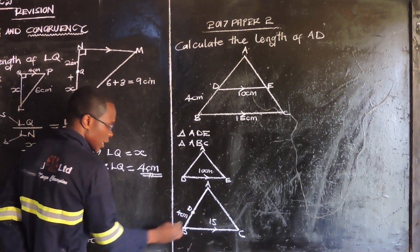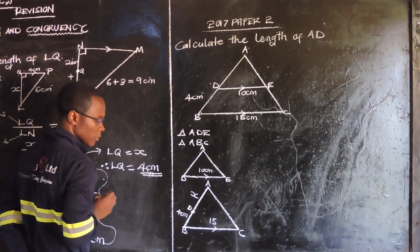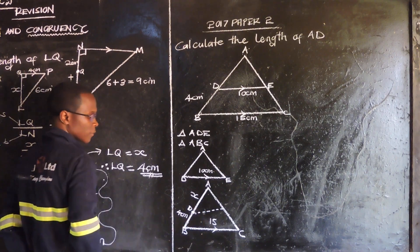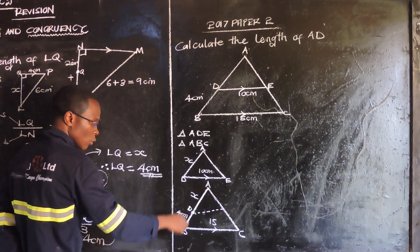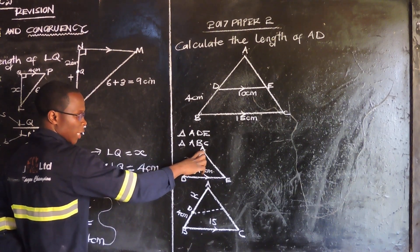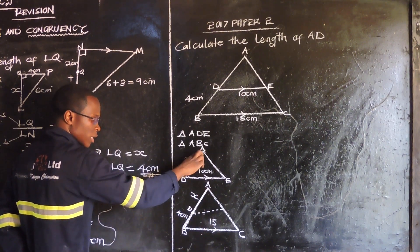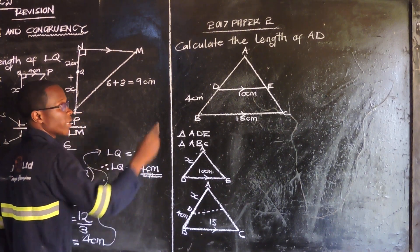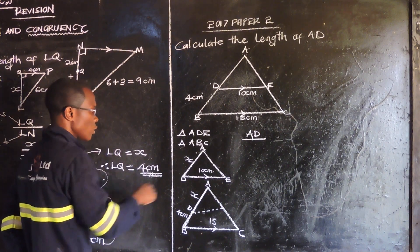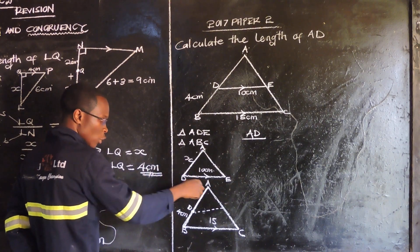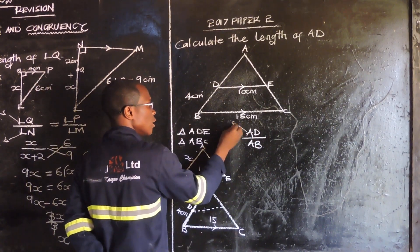We don't know AD, so we let AD = x. Now, AD corresponds to AB — the side from A in the small triangle corresponds to the side from A in the big triangle. So AD goes with AB.